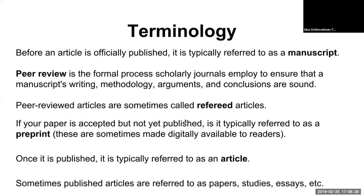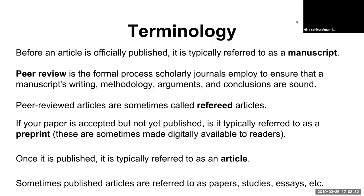Before we dive in, I always like to cover some terminology. There are different terms for what you're working with based on how far along it is in the publishing pipeline. Before an article is officially published, it's typically referred to as a manuscript — we sometimes think book-length when we hear that word, but whatever you've written, regardless of length, is generally called a manuscript. Peer review is the formal process that scholarly journals employ to ensure that a manuscript's writing, methodology, arguments, and conclusions are sound.